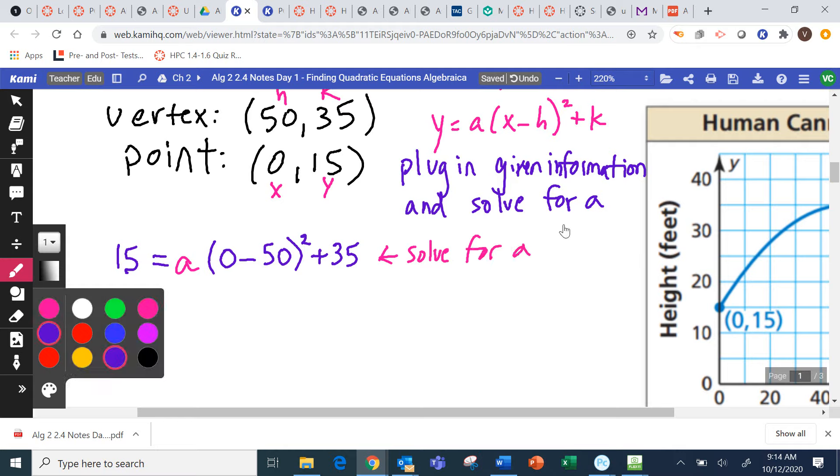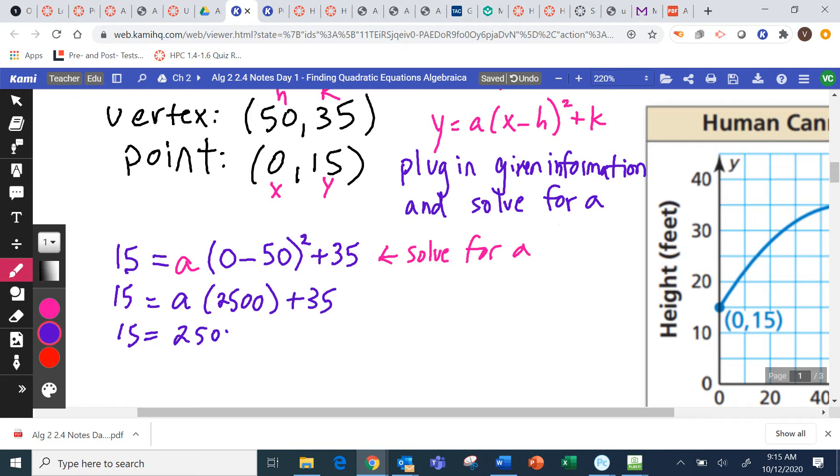So to solve it for A, we need to make sure that we simplify with our order of operations and then isolate A. So if I do negative 50 squared, that is 2,500 plus 35. So I have 2,500A plus 35. So I need to solve that.